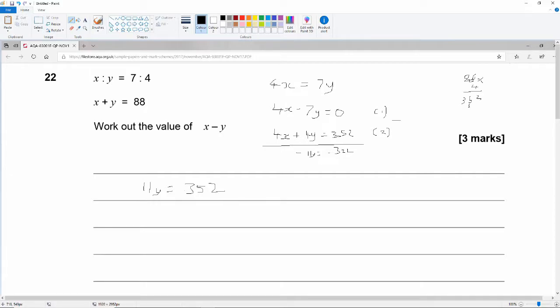So 11y is equal to 352. So y is equal to 352 divided by 11. Oh, gosh. Alright, let's just check that that is right. 3 plus 2 is 5. So yeah, it is a multiple of 11. So it's going to come out to a whole number. Right, so let's just do this as long division. 352 divided by 11.